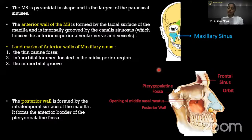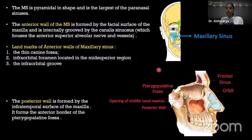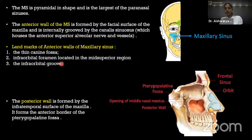We will first come to the anatomy of the maxillary sinus. The maxillary sinus is pyramidal in shape and is the largest of the paranasal sinuses. It has an anterior wall, posterior wall, medial wall, and lateral wall, as well as superior and inferior walls. The anterior wall is formed by the facial surface of the maxilla and is internally grooved by the canalis sinusus — also called the canine fossa — which carries the anterior superior alveolar nerves and vessels.